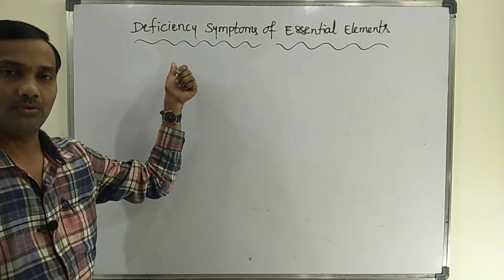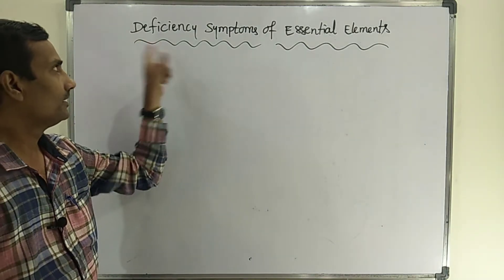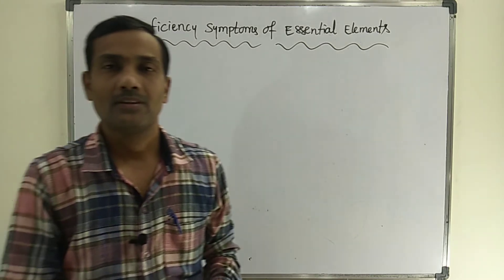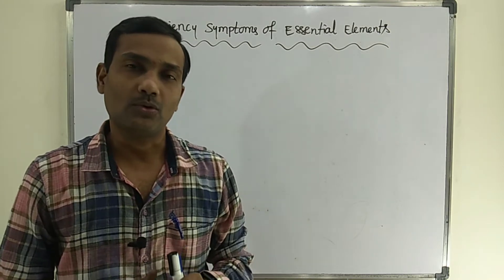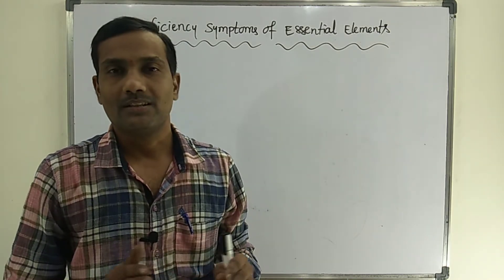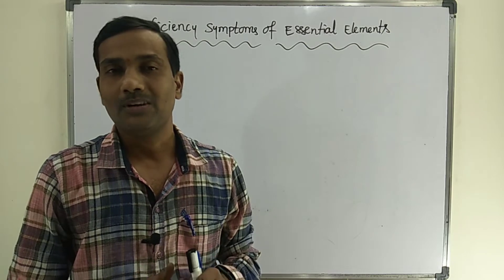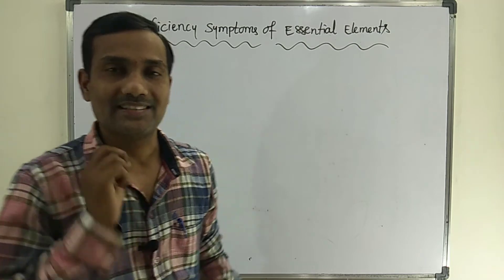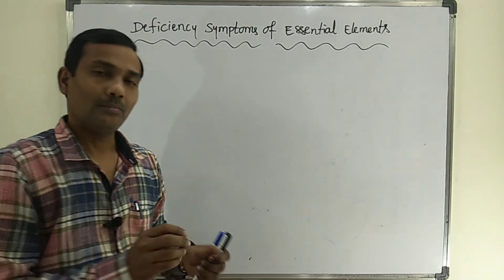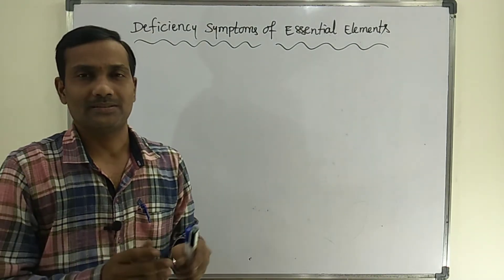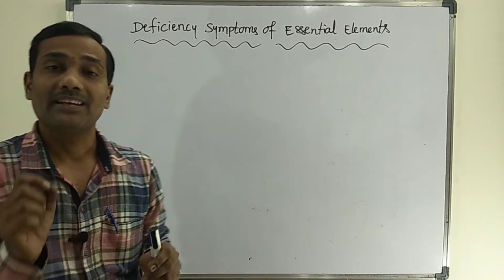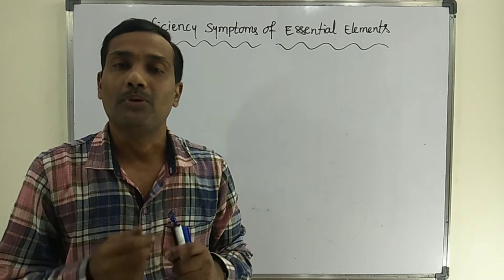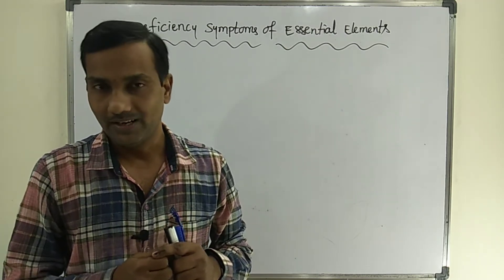Let's discuss the topic: deficiency symptoms of essential elements. In plants, there are a total of 17 essential elements — 9 macro and 8 micro elements. All these are essential elements, and each and every essential element plays an important role in plant growth and development.